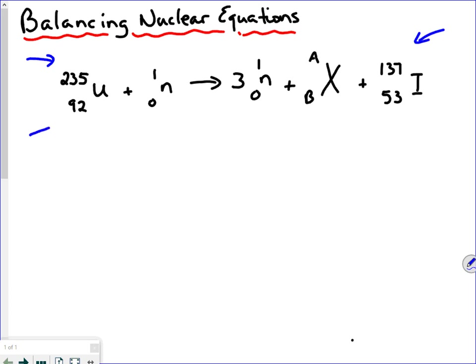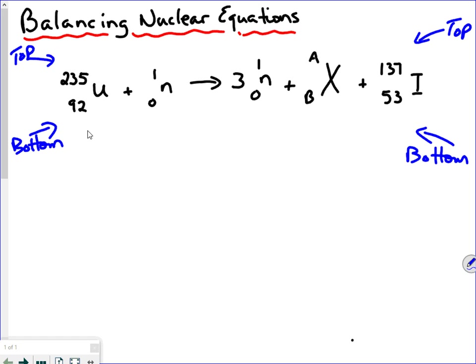And the atomic number on this side is equal to the atomic number on this side. A way to think of it is: the top numbers must equal the top numbers, and the bottom numbers must equal the bottom numbers. Top equals top, bottom equals bottom — atomic masses on the top, atomic numbers on the bottom.